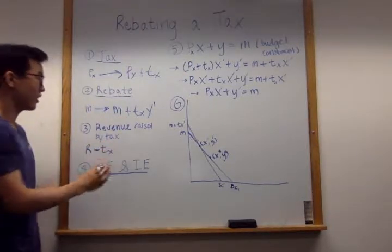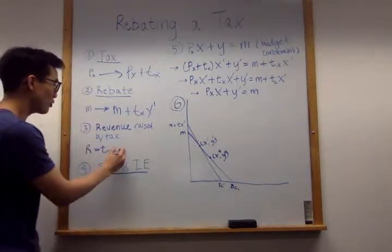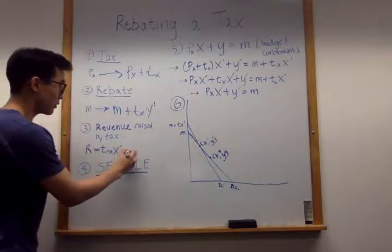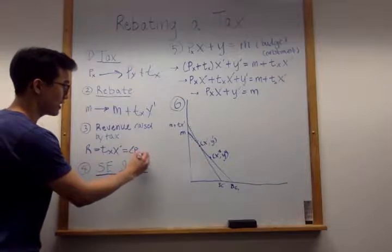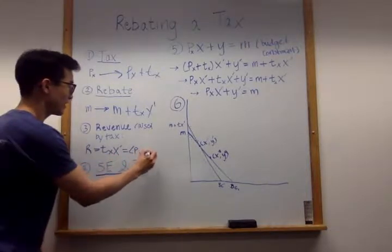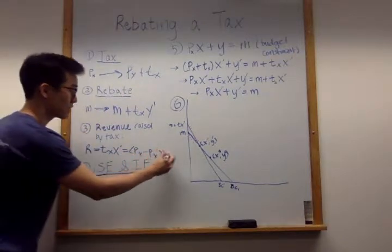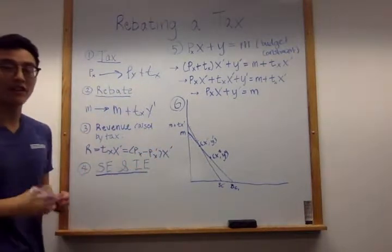This is also going to equal the old price of X minus the new price of X under the tax rebate plan times the quantity of X demanded under this plan.